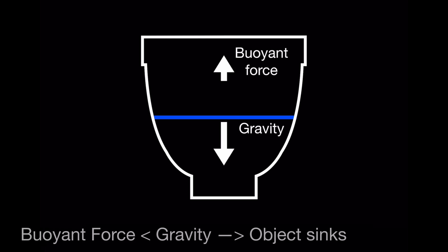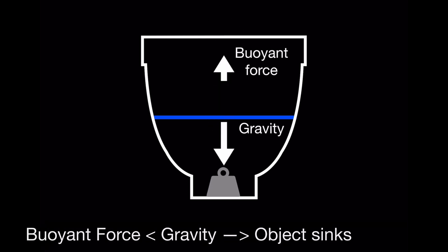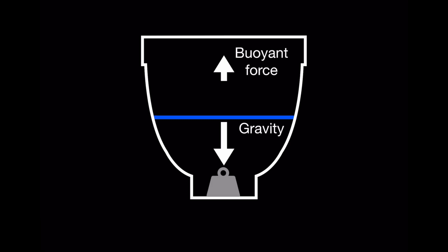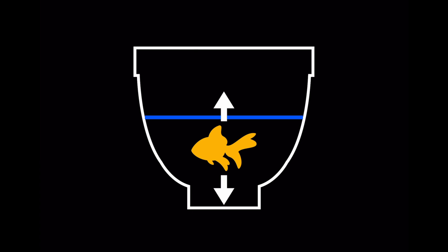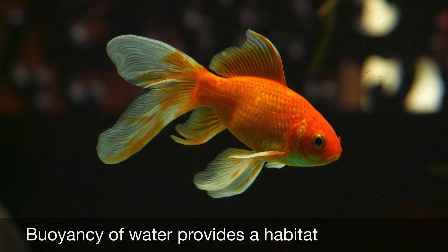In contrast, if the density of the object is greater than that of the fluid, then the buoyant force will be less than gravity and the object will sink. This is significant to organisms that live in water, because living organisms have a density that is quite close to that of water, so the buoyant force is very similar to the force of gravity. This allows organisms like this fish to float in water and therefore use water as a habitat.